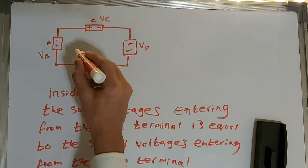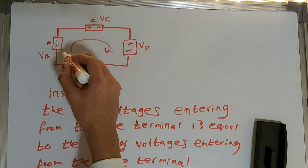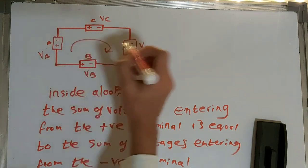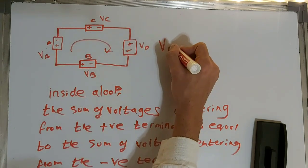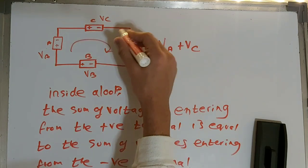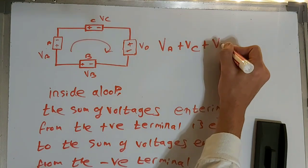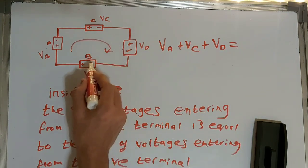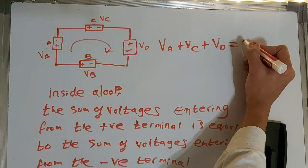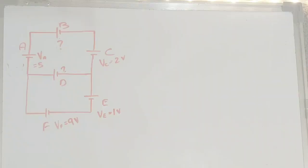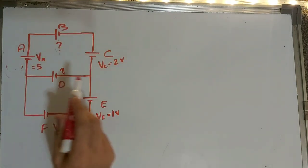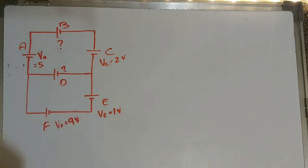Going clockwise, the first element is VA going from plus to minus, so VA plus VC going from plus to minus, plus VD equals the voltage entering from the negative terminal, which is VB. Now let's take a circuit where A, B, C, D, E, F are batteries and B and D are unknowns.